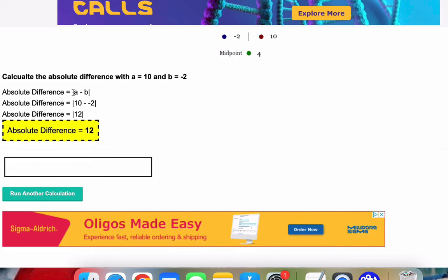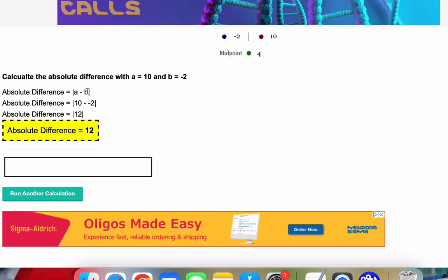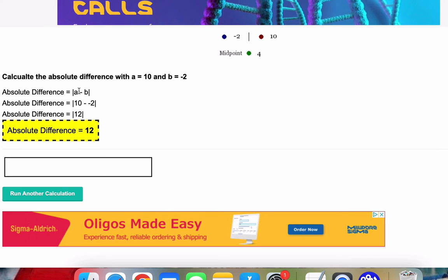So we'll go ahead. And the absolute difference is just the absolute value of number 1 minus number 2, or a minus b, or x minus y.